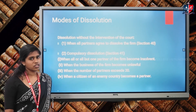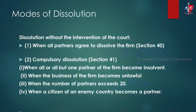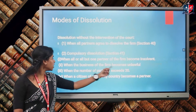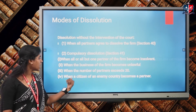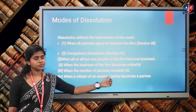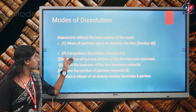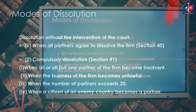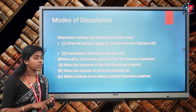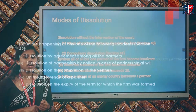Next is compulsory dissolution, explained in Section 41 of the Indian Partnership Act. The firm will be compulsorily dissolved under the following situations: when all or all but one partner becomes insolvent; when the business of the firm becomes unlawful; when the number of partners exceeds 20; and when a citizen of an enemy country becomes a partner. Under these four scenarios the firm will go for compulsory dissolution.